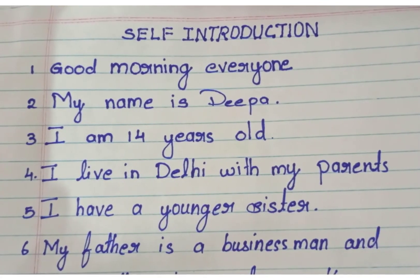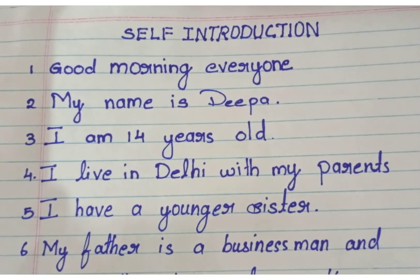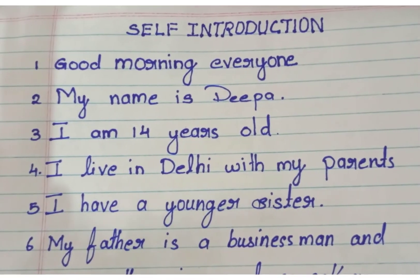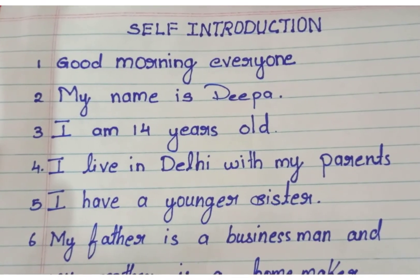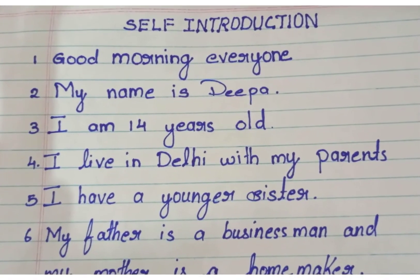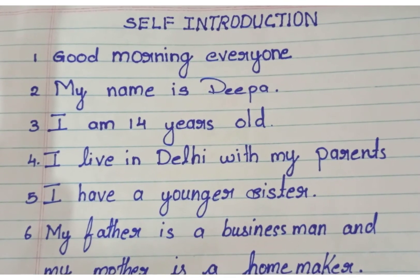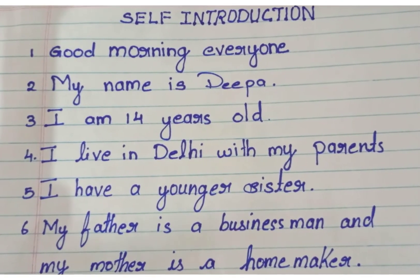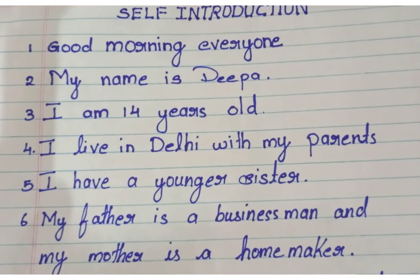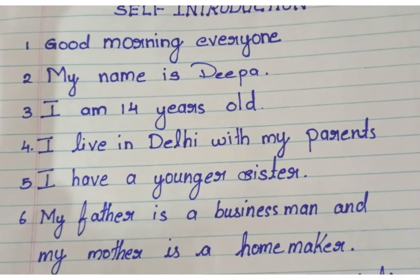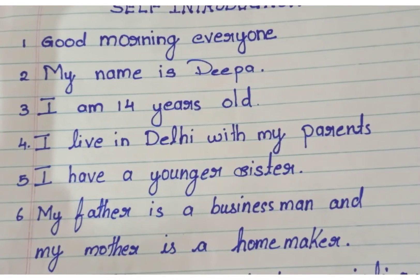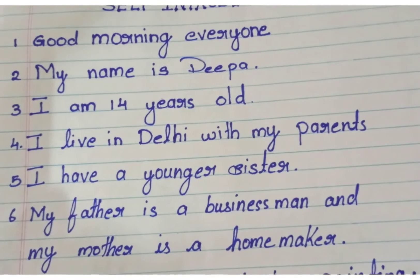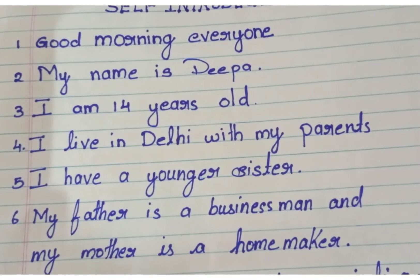Third, state your age — for example, I am 14 years old. Change your age there. Fourth, state where you live — for example, I live in Delhi with my parents. Change your place as well. Fifth, mention your siblings — for example, I have a younger sister.